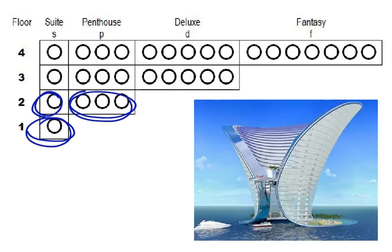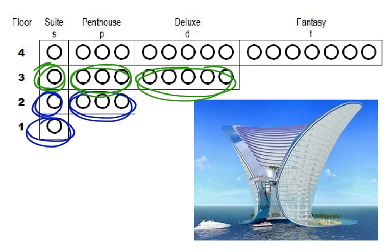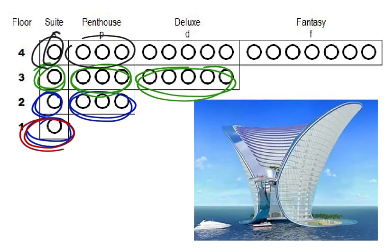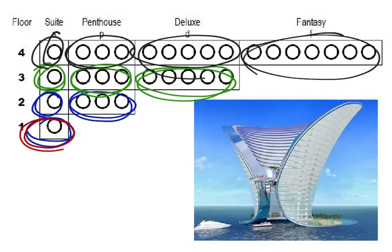Each of these circles represents one room. On the second floor you have a suite but also three penthouse-type rooms. On the third floor you've got a suite, three penthouse-type rooms, and five deluxe rooms. The pattern goes one, three, five, seven — and each floor has more types of rooms. On the fourth floor we add seven fantasy-type rooms.